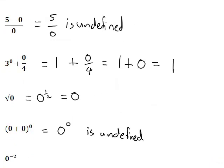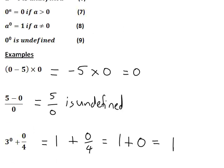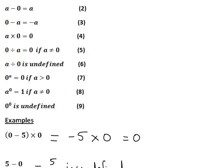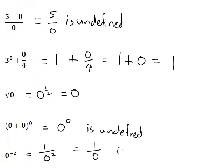Let's do one final example. We talked about 0 to the 0 being undefined and 0 to the power of a positive number being 0. So what happens with 0 to the power of a negative number, such as 0 to the negative 2? A negative power means 1 divided by 0 to the corresponding positive power, so 1 divided by 0 squared. Now 0 squared is 0 to a positive number, so from rule 7 that is 0. So 1 divided by 0 squared is 1 divided by 0. But from rule 6, any number divided by 0 is undefined. So therefore 0 to the negative 2 is undefined, and it follows that 0 to the power of any negative number will indeed be undefined.